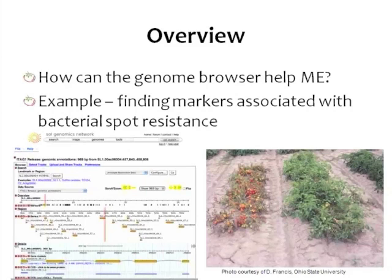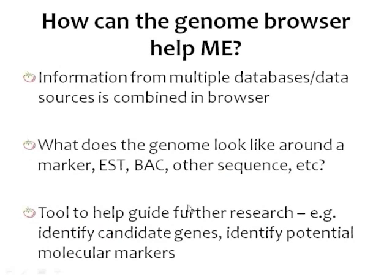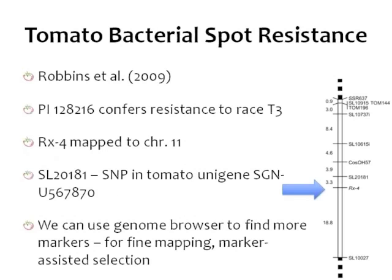I've just shown you an image of the Genome Browser and of lines in the field that were both susceptible and resistant to bacterial spot. As I mentioned in the first part of this talk, we have information from multiple databases and data sources combined in our browser. We want to use the browser to see what our genome looks like around a marker, an EST, or a BAC. This can be a tool to help guide further research — for example, to identify candidate genes or potential molecular markers.